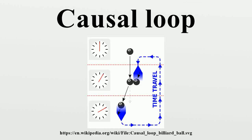A causal loop, in the context of time travel or retrocausality, is a sequence of events in which an event is among the causes of another event, which in turn is among the causes of the first mentioned event.